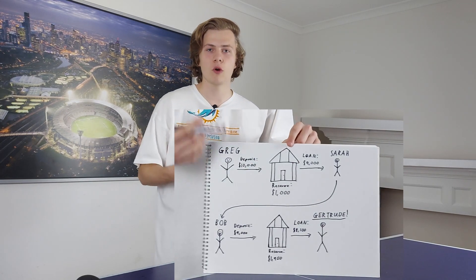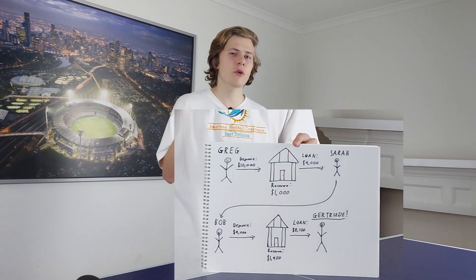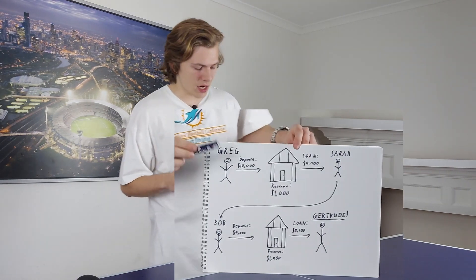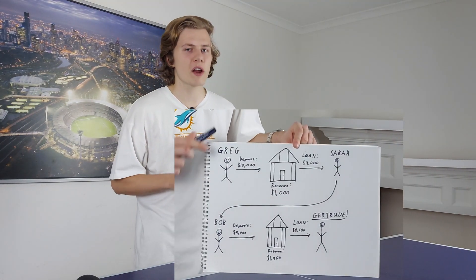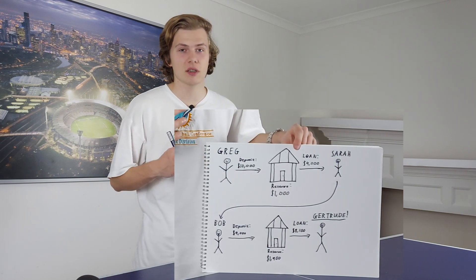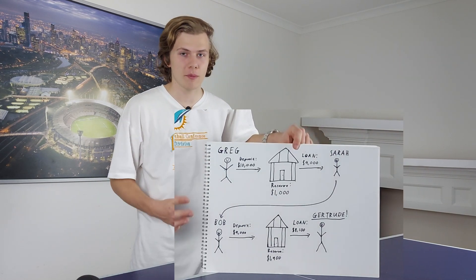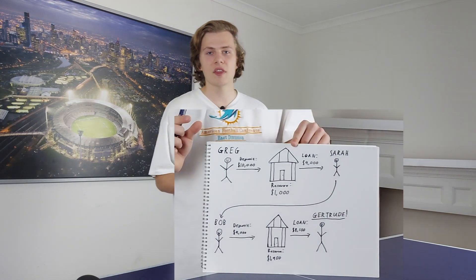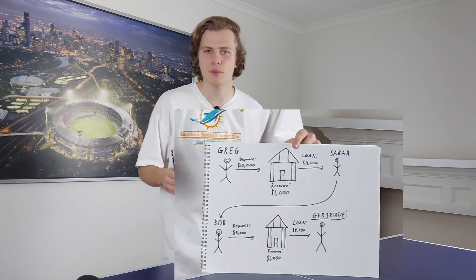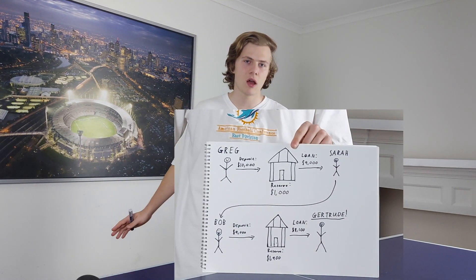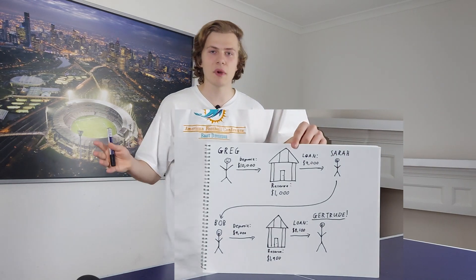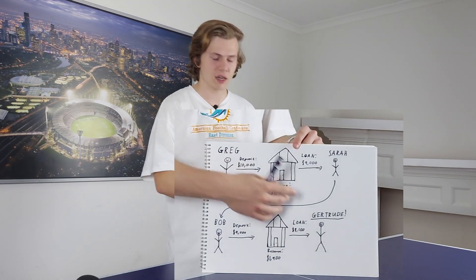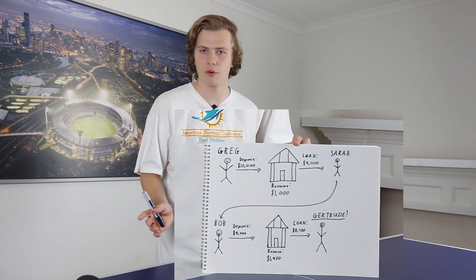What this credit effectively means is that the bank believes people won't all pull out their money at once. So they keep a 10% small reserve in case people withdraw small amounts. But they keep getting money deposited, keep giving out loans, make more money, and can end up paying people back in case they want to withdraw.